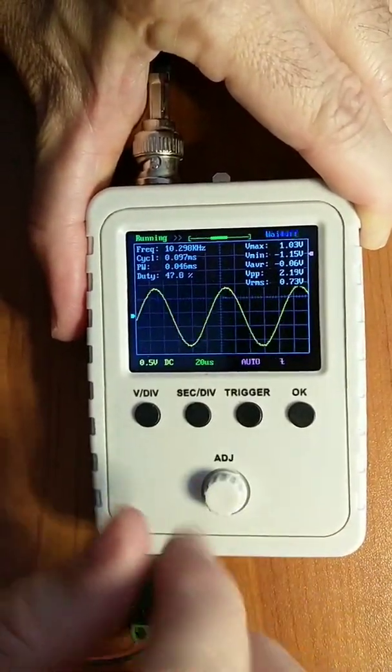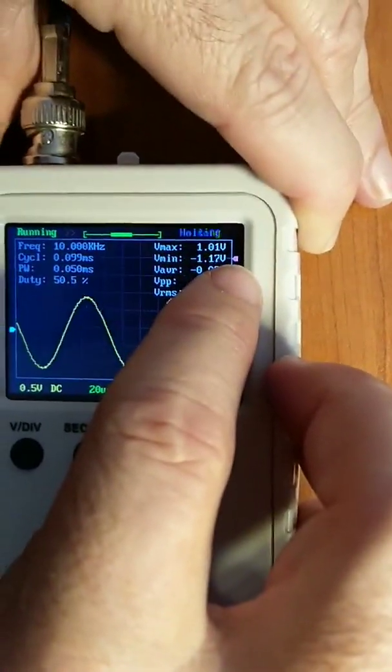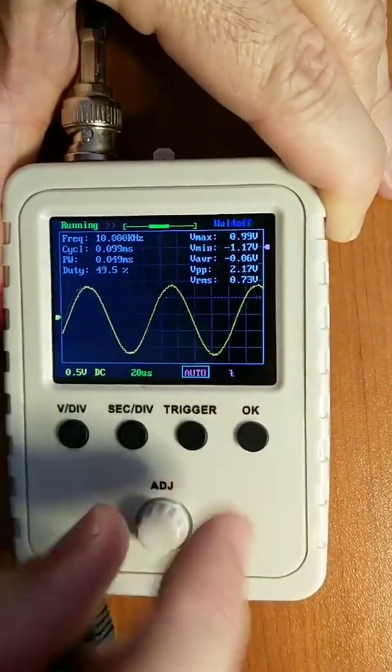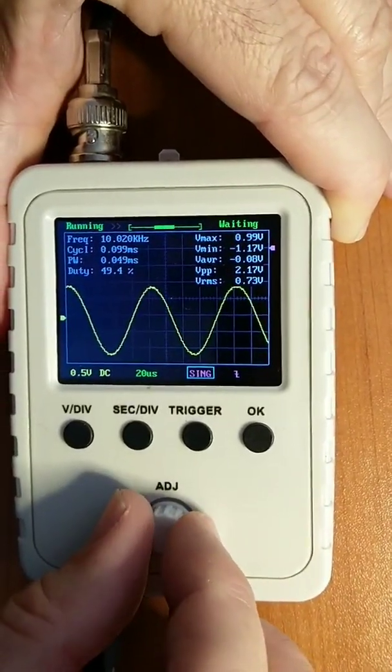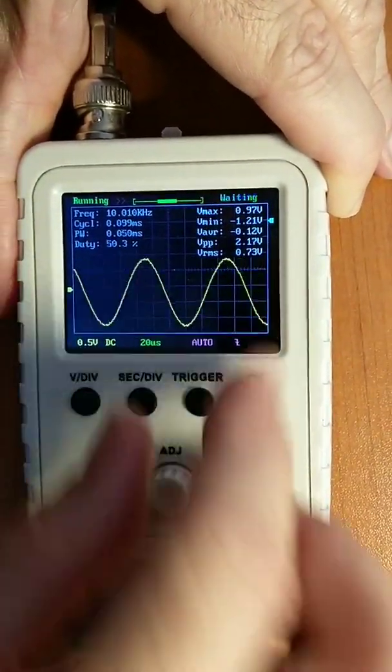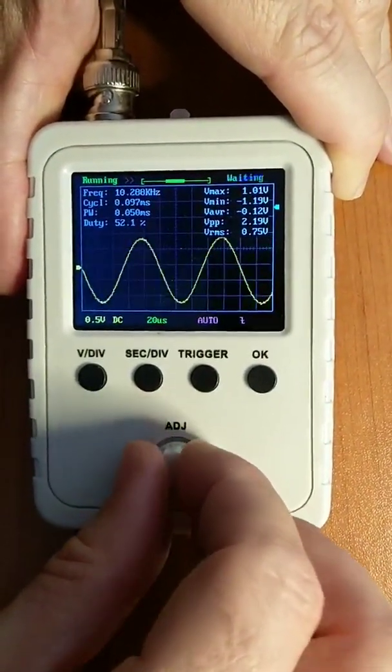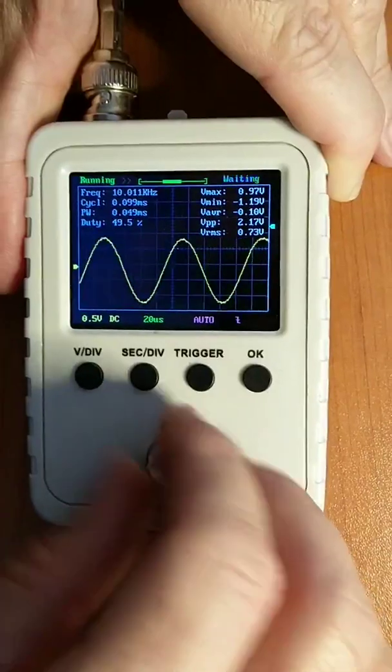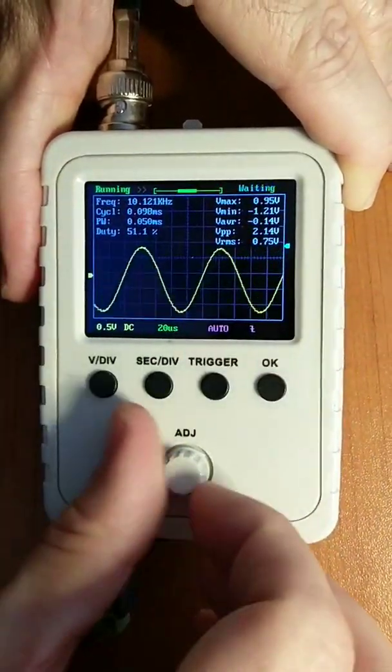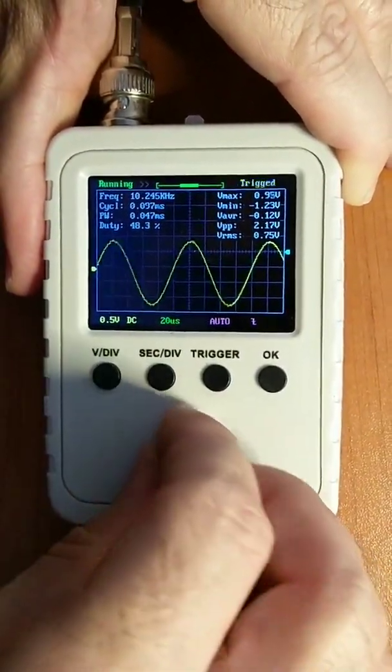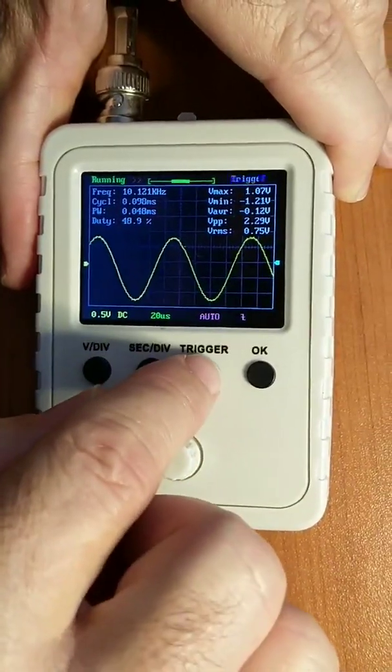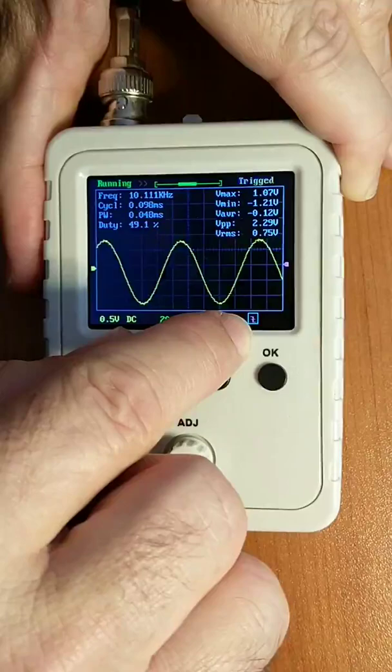Now the arrow there is your trigger level. To adjust that, you press trigger. The first time you press trigger, you can set it between auto, normal, or single shot. The second time you press trigger, that arrow becomes blue and you can adjust it. To bring it down, adjust it counterclockwise. You can also press and hold trigger for three seconds to auto-adjust that arrow, but in this case it's not necessary. If I press the trigger button one more time, I can specify trigger on a falling edge or rising edge by adjusting this knob.